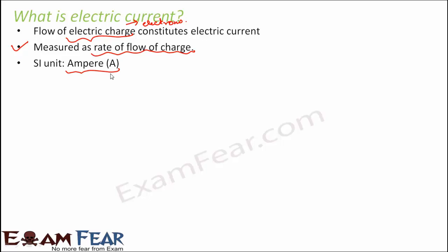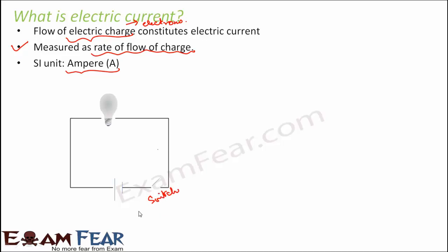Now when you look at this circuit, there is a bulb connected to a battery or cell, and there is a switch. These are the standard ways to represent a switch, battery, or cell in an electric circuit diagram. When we switch it on, the entire circuit is complete, electric current flows through the circuit, and this makes the bulb glow.